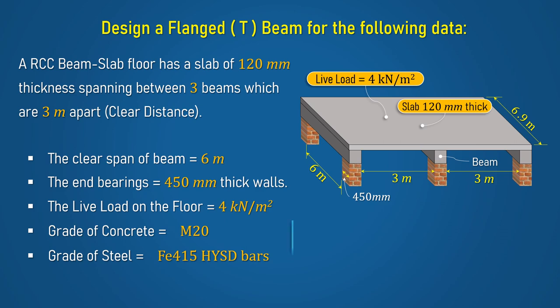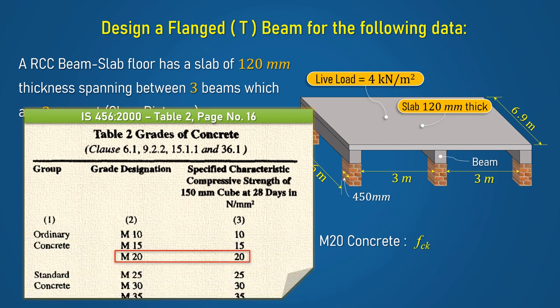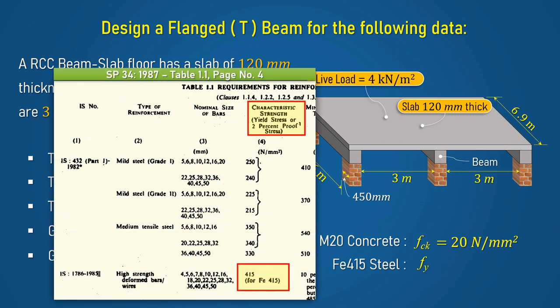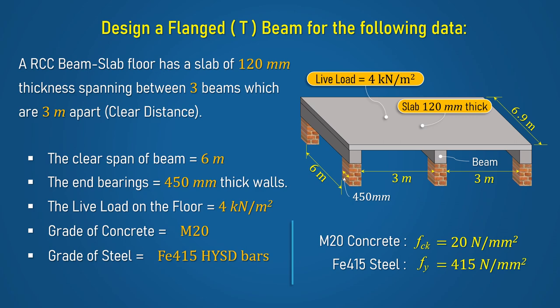Get the values of FCK and FY. As per table 2 of IS456-2000, the value of FCK for M20 grade concrete is 20 N/mm². The value of FY for Fe415 steel is 415 N/mm² as per SP34-1987 table 1.1.